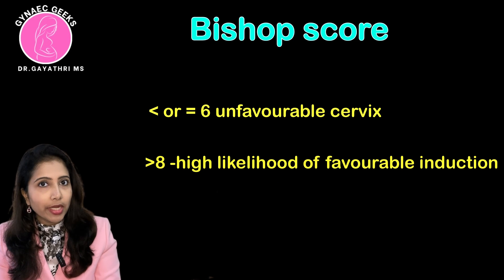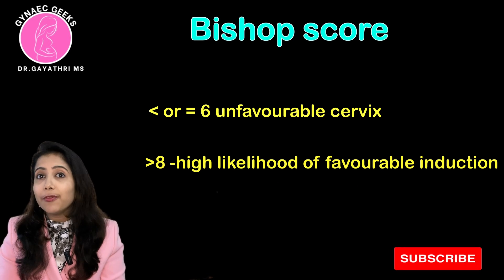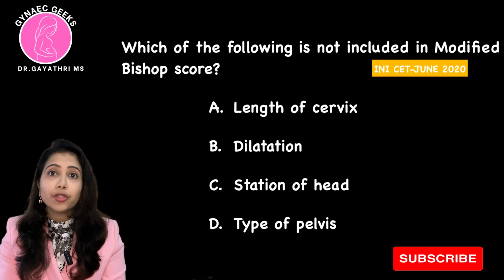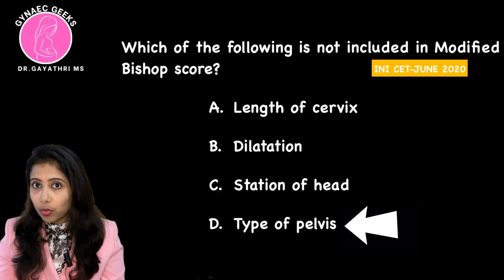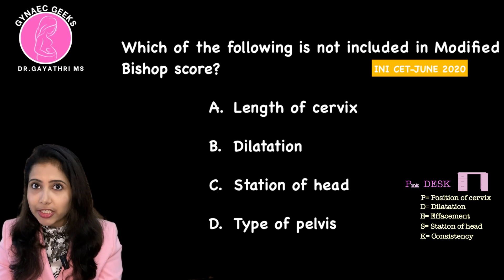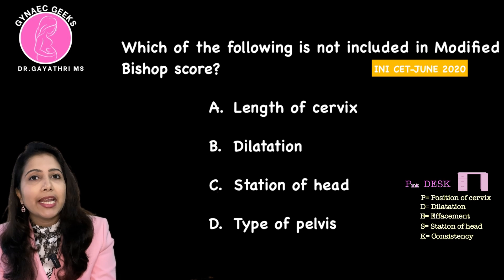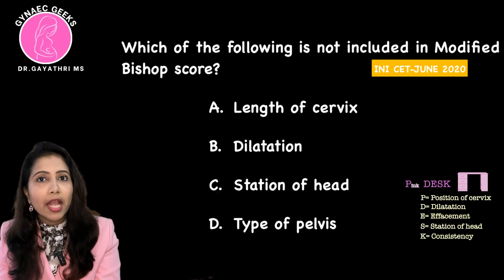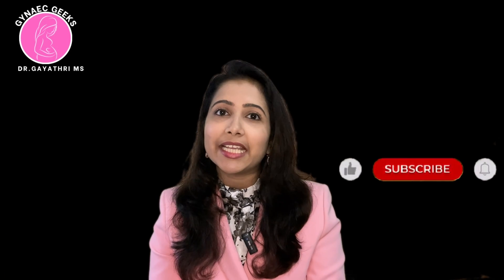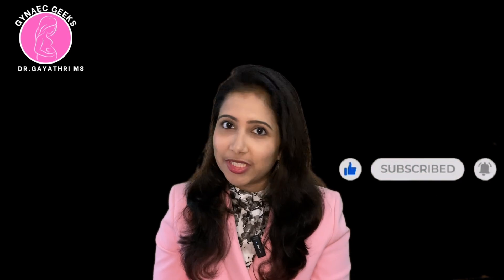A Bishop's Score less than 6 is suggestive of an unfavorable cervix, and in such a case we will go for induction of labour. For the first question, using the mnemonic PINK DESC — position, dilatation, effacement (replaced by cervical length in modified score), station, and consistency — type of pelvis is not a component, making it the correct answer. Hope that makes it clear and easy to remember. We will be discussing more high-yield topics from Obs and Gynae — please subscribe and we'll be back with the next topic. Bye bye.